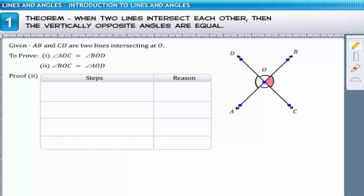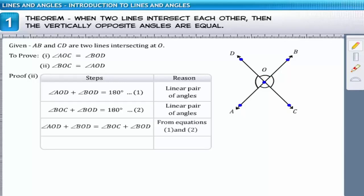Next, we need to prove that angle BOC is equal to angle AOD. Again, since AB is a line, the sum of angles AOD and BOD is equal to 180 degrees. Similarly, CD is a line. Therefore, the sum of angles BOC and BOD is equal to 180 degrees. Now, since the RHS of both equations 1 and 2 are equal, on equating the LHS of both equations, we get angle AOD which is equal to angle BOC. These are vertically opposite angles.